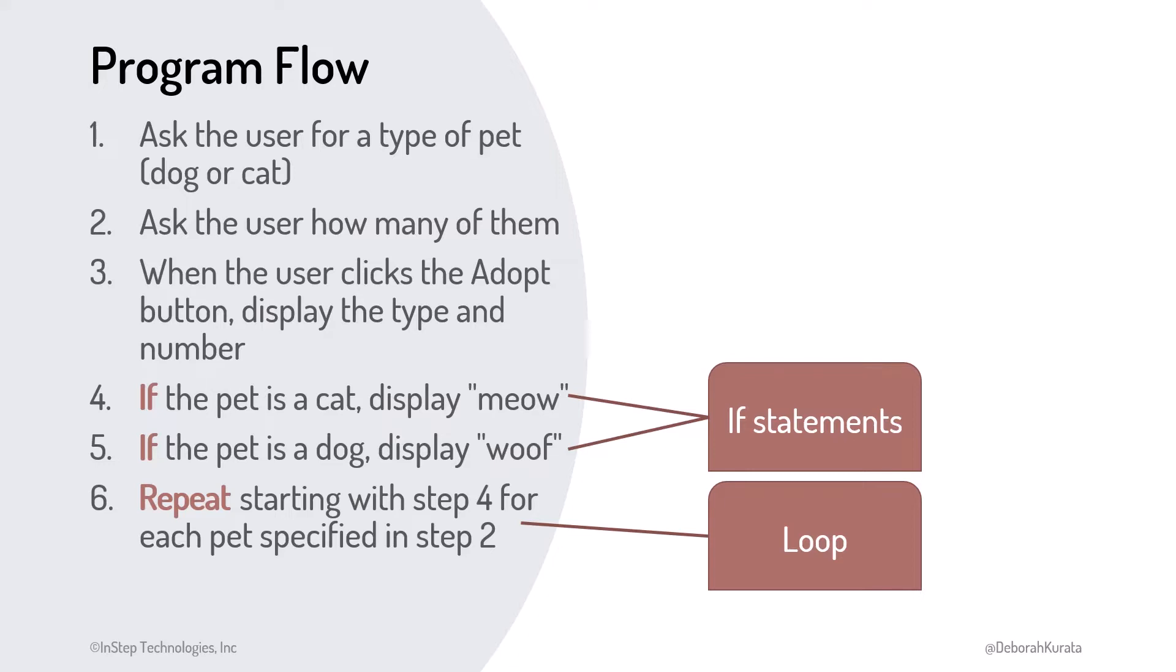The if and loop are examples of flow of control statements. Control flow refers to the order our provided instructions are processed by the computer. And flow of control statements can impact that flow.